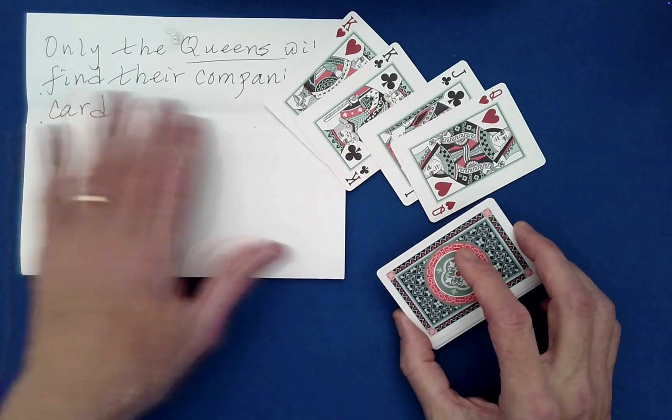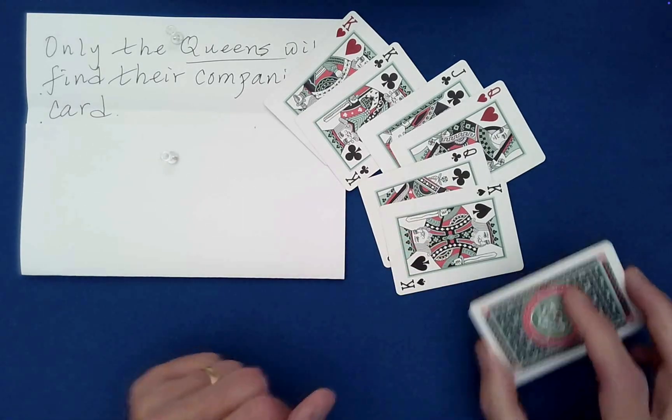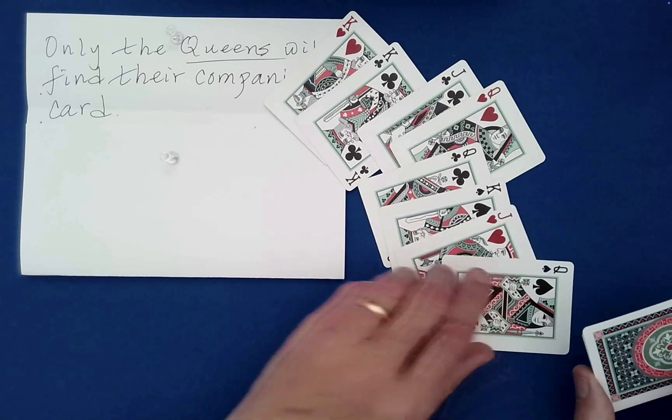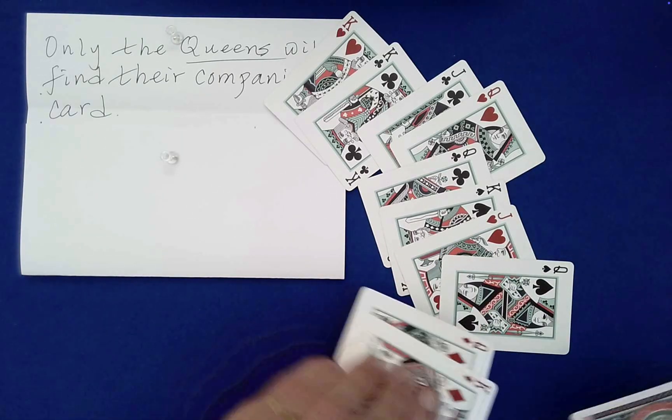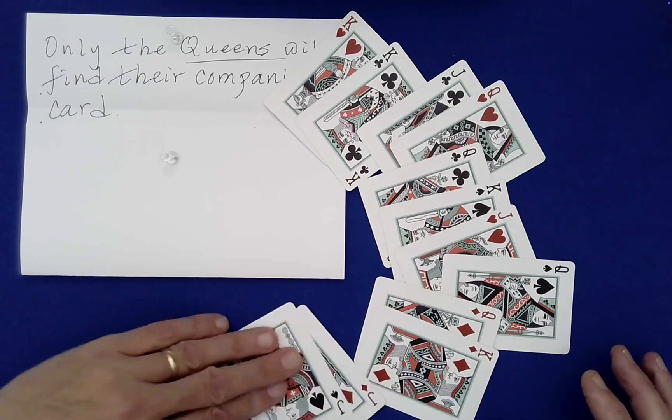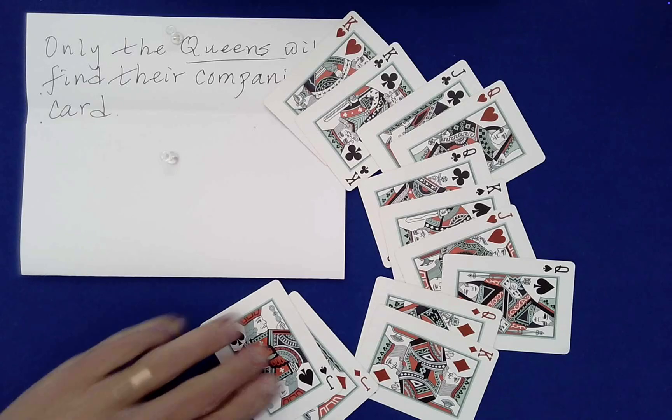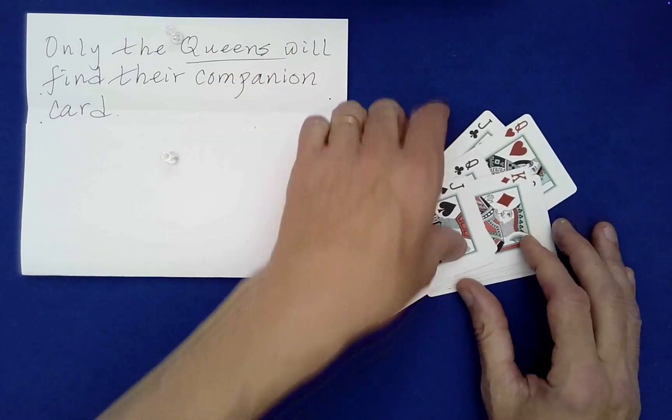What about the next one? Only the queens? Oh, that's not good. I said only the queens will find their companion cards. Oh, that's not good, queens are failing here. Everyone's failing. Oh, queen of diamonds failed there.